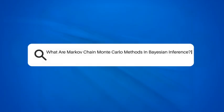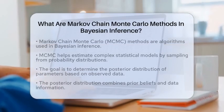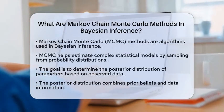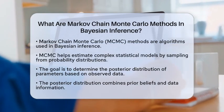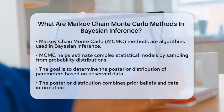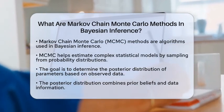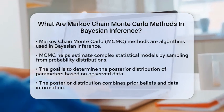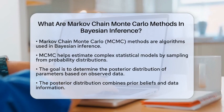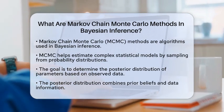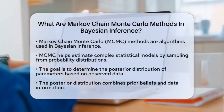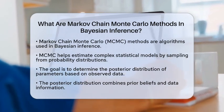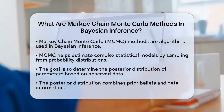What are Markov chain Monte Carlo methods in Bayesian inference? Imagine you are trying to find your way through a dense forest without a map. You can only see a few steps ahead, but you want to reach a specific destination. This scenario is similar to what researchers face when they want to estimate complex statistical models. One effective way to navigate this uncertainty is through Markov chain Monte Carlo methods, often referred to as MCMC.